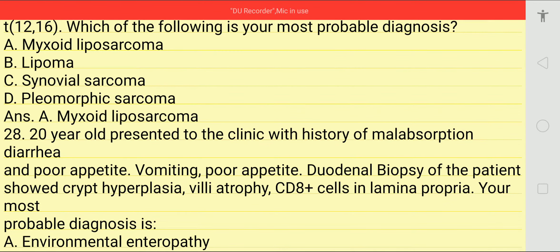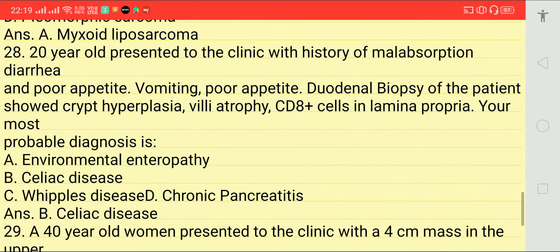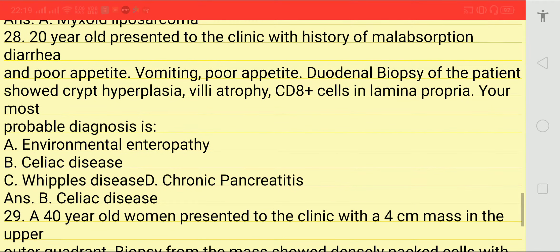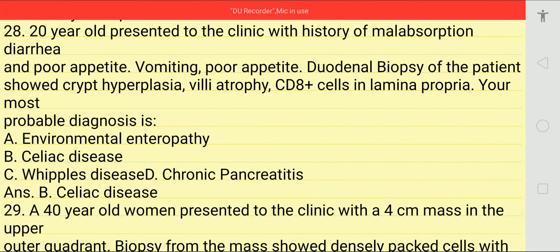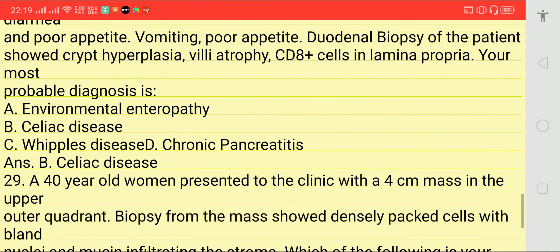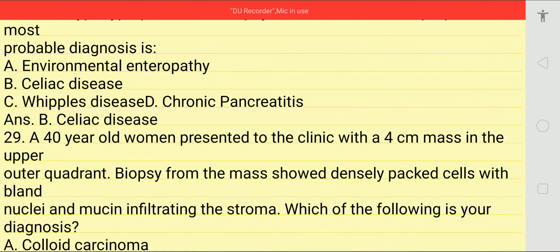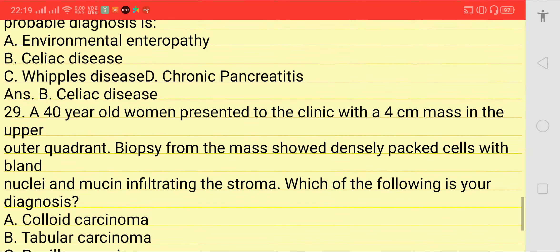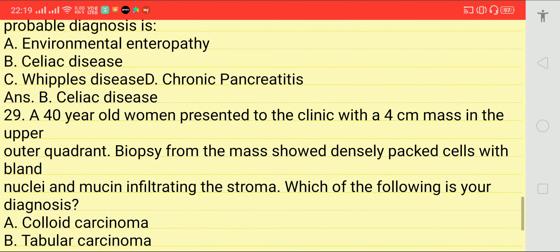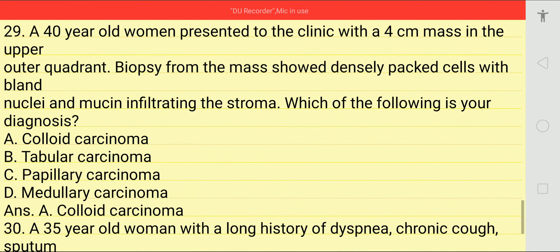A 20-year-old presented to clinic with history of malabsorption, diarrhea, and poor appetite with vomiting. Duodenal biopsy showed increased crypt hyperplasia, villous atrophy, and CD4 cells in the lamina propria. Most probable diagnosis is option C — celiac disease.